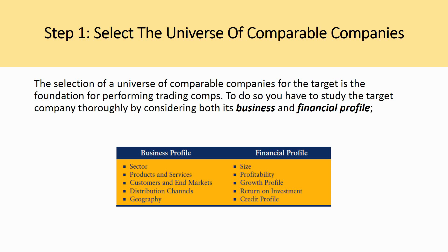In step one, the selection of a universe of comparable companies is the foundation for performing trading comps. You have to study the target company thoroughly by considering both its business and financial profile. A lot of times people rush through this analysis and overlook the due diligence portion, simply assuming that because a company is in the oil sector, it can be compared to any other oil company. That's not the case. You want to understand its sub-sector, products and services, customers and end markets, distribution channels, and geography — all of which could eliminate businesses that initially seemed comparable.